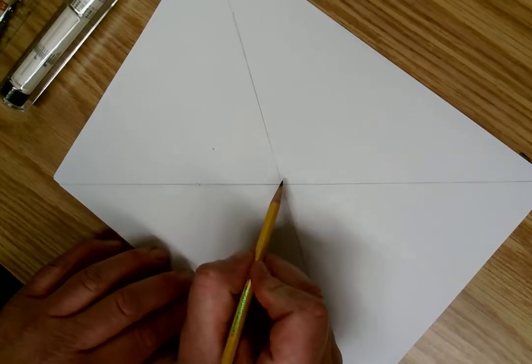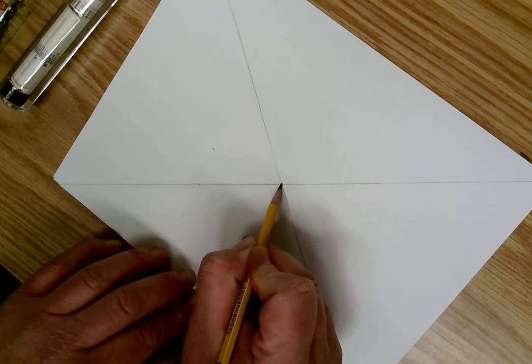Now, X marks the spot. That is where the center of the page is, and that's where I'm going to put my vanishing point.